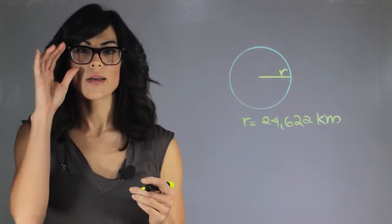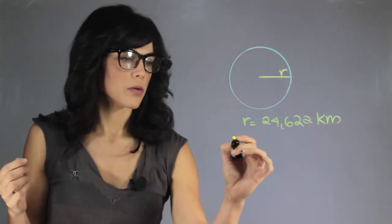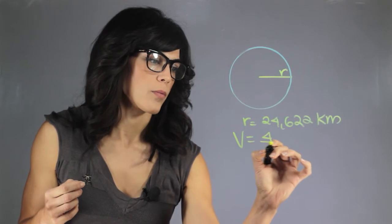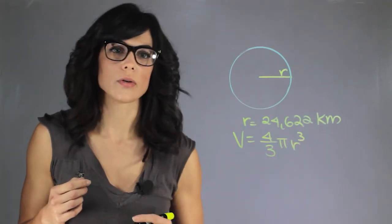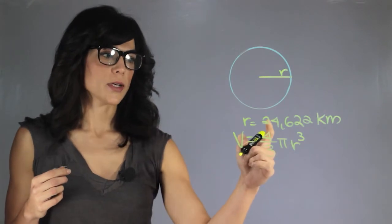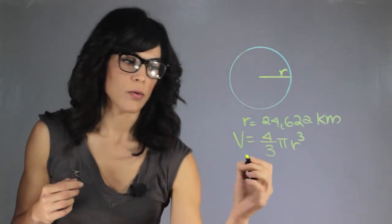Now how do we calculate the volume of a planet? Assuming that it's spherical, we can use the equation 4 thirds pi r cubed and if you plug in the radius and the equation for the volume,